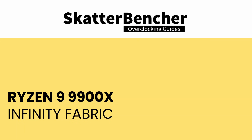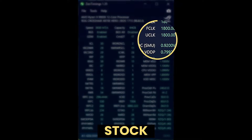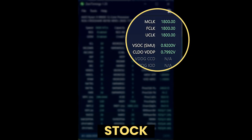Lastly, I also looked at increasing the infinity fabric frequency. The fabric frequency, or f-clock, is generated by the SoC PLL, derived from a 100 MHz reference clock input. The reference clock is multiplied by an f-clock ratio, which you can configure in the BIOS. The standard operating frequency of the infinity fabric is 1800 MHz.